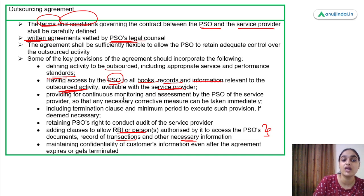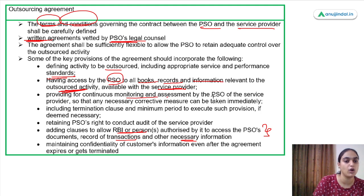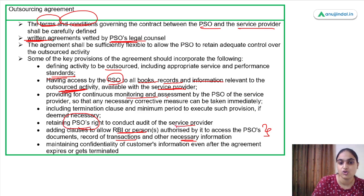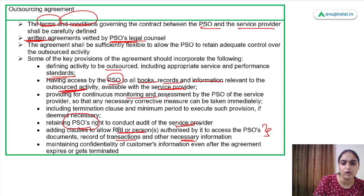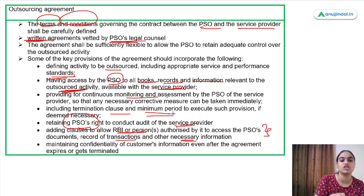The agreement should also provide for continuous monitoring and assessment by the PSO so that corrective measures can be taken immediately. The PSO's right to conduct audit of the service provider should also be included. Additionally, there should be a termination clause specifying when the outsourcing agreement ends and the minimum notice period. A very important clause is that customer information will be kept confidential.